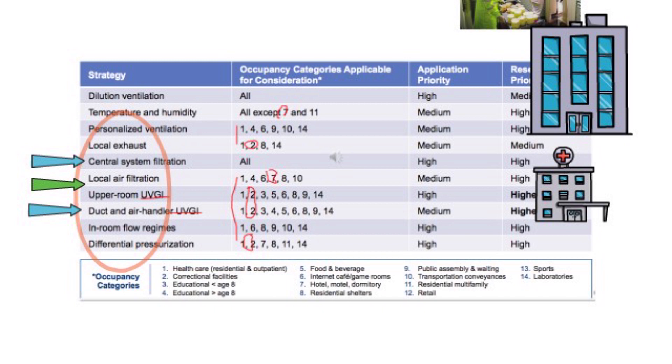Another example is the correctional facilities, building type number two. Dilution ventilation and local exhaust are the strategies to use. Also applicable are two UVGI strategies and air differential pressurization.